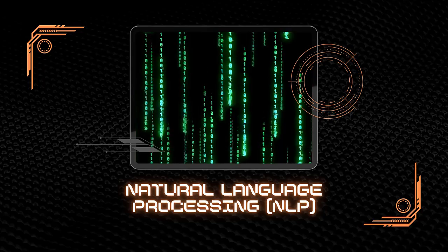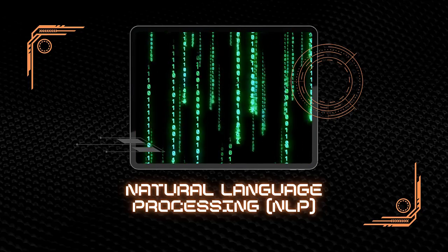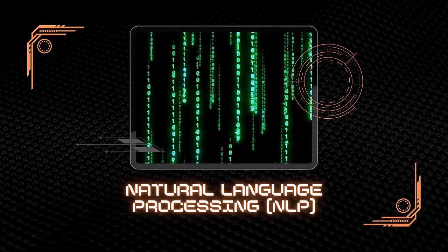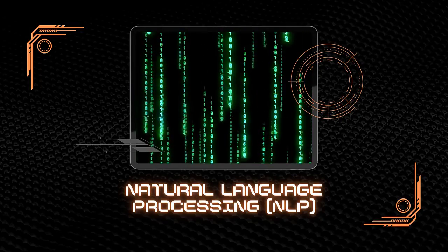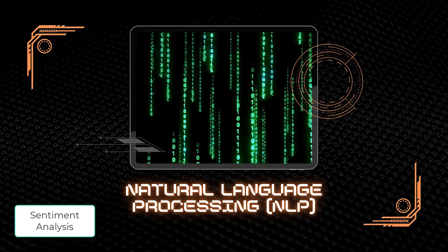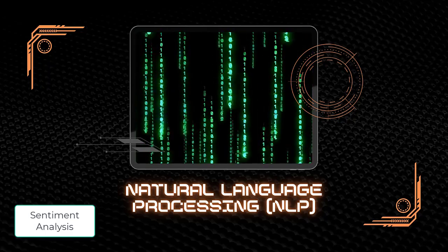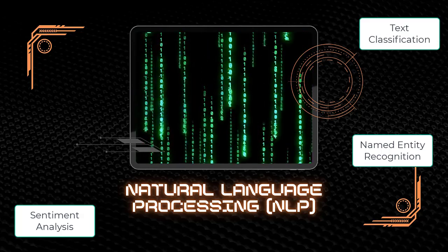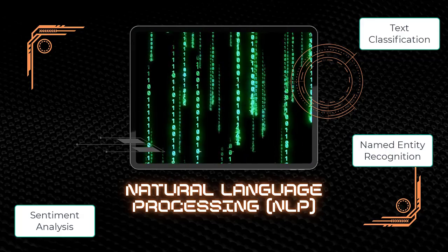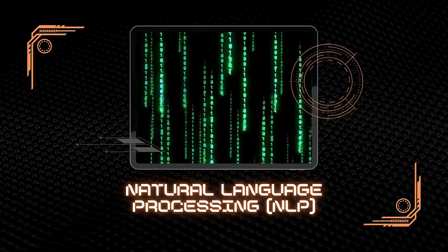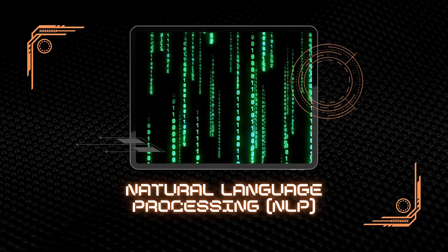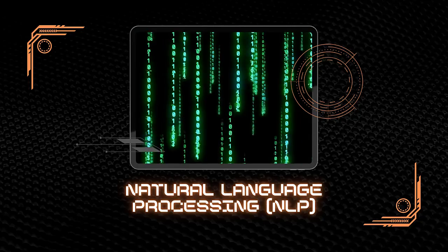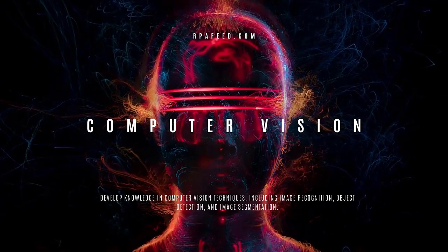Next is NLP, known as Natural Language Processing. NLP enables RPA bots to understand and process unstructured data. Learn techniques such as sentiment analysis, named entity recognition, and text classification. This knowledge will help your bots comprehend and act upon actual information — for example, analyzing logs you get from your bots.